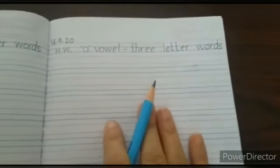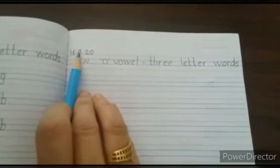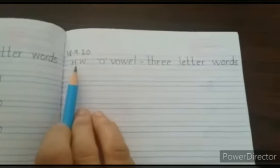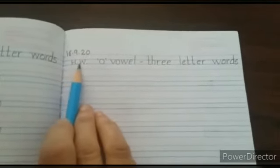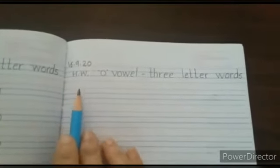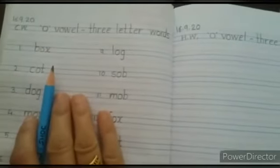Now we have finished our class work. On right side page you will do your homework. So in the left corner write today's date, 16.9.2020. Below date write H.W. dot. Then write numbers from 1 to 16. After numbers write all the words from class work.